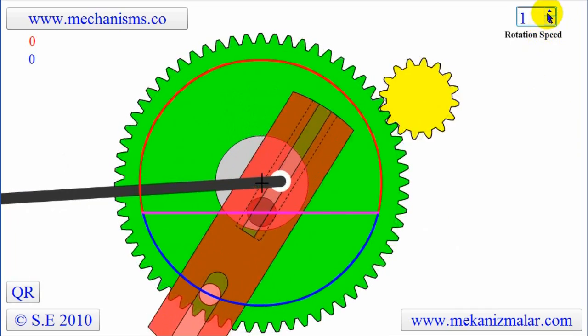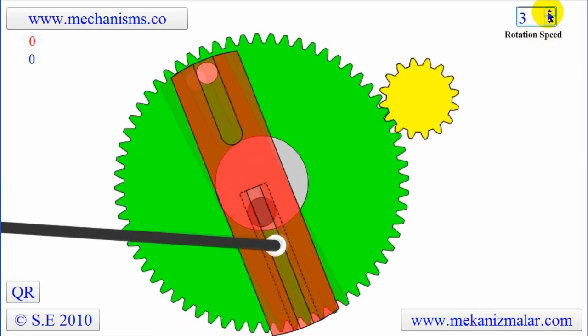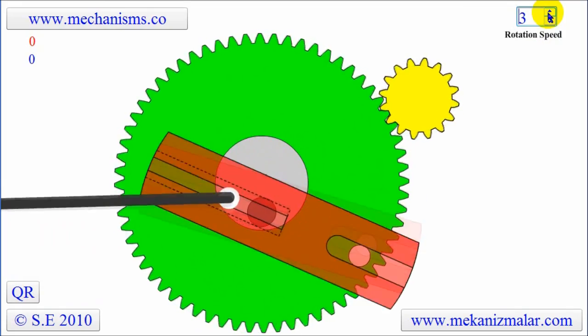As you can see, once the upper white pin is closer to the rotation center, the stroke size of the black link is shorter.